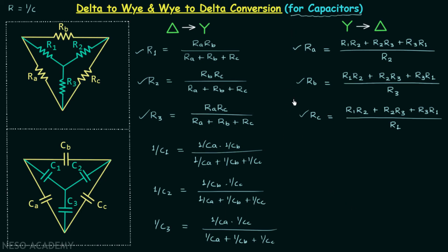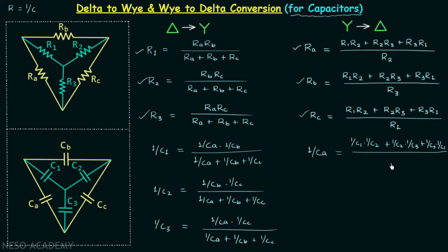For this we will refer this set of formulas. Here we have 1 over CA in place of RA, equal to (1 over C1 multiplied by 1 over C2, plus 1 over C2 multiplied by 1 over C3, plus 1 over C3 multiplied by 1 over C1) divided by 1 over C2. From here we can calculate CA.